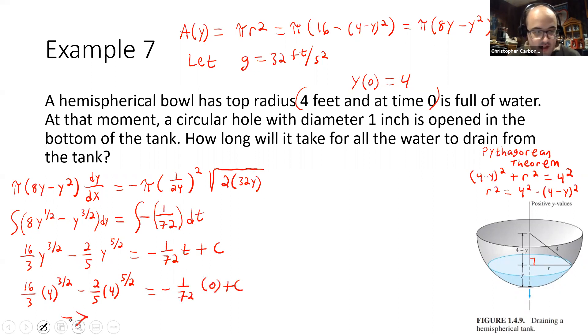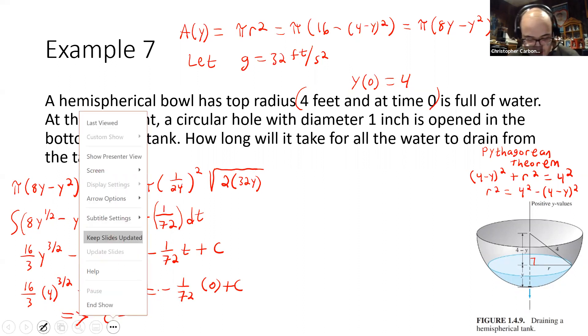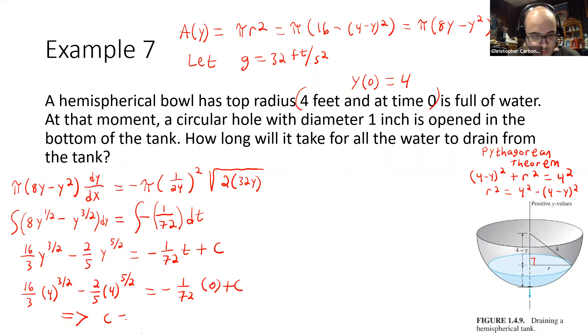This would then imply that once we actually compute this, do all the calculations, we would obtain for this answer to be equal to, first written out, this would be as 16 thirds times four to the three-halves power minus two-fifths times four to the five-halves power. And doing so would give us a value of, as a fraction, 488 over 15. A complex fraction, certainly.